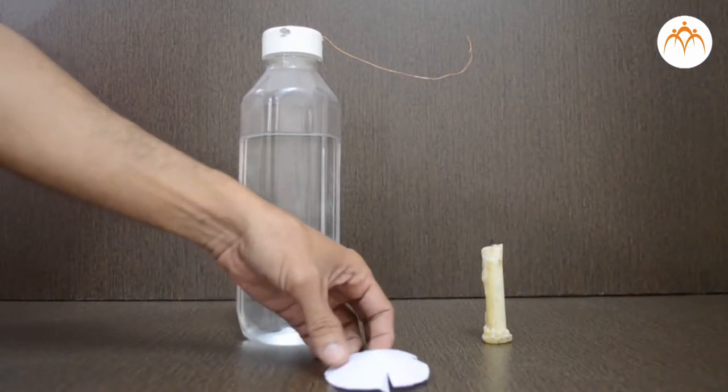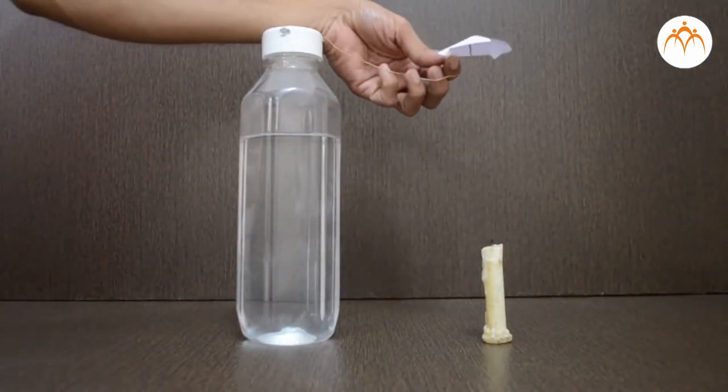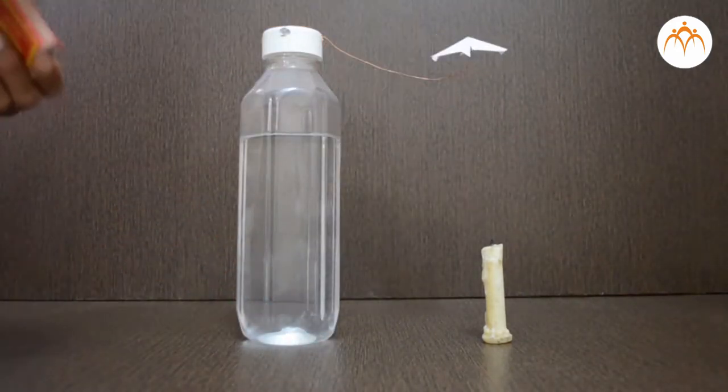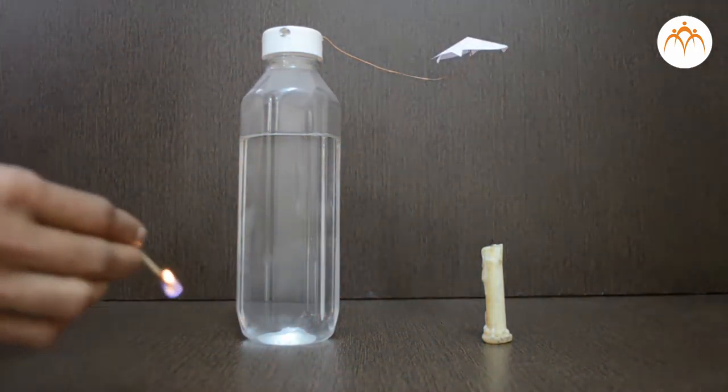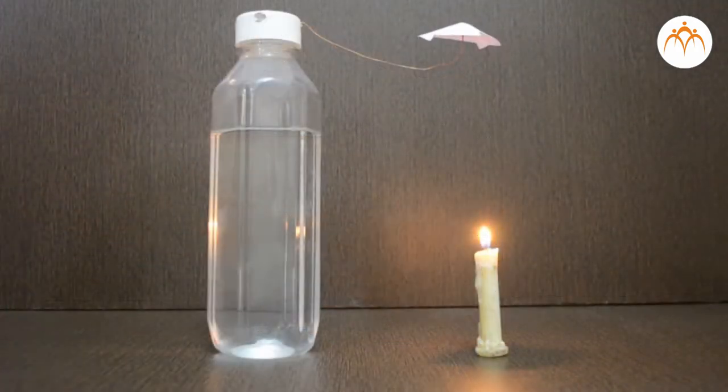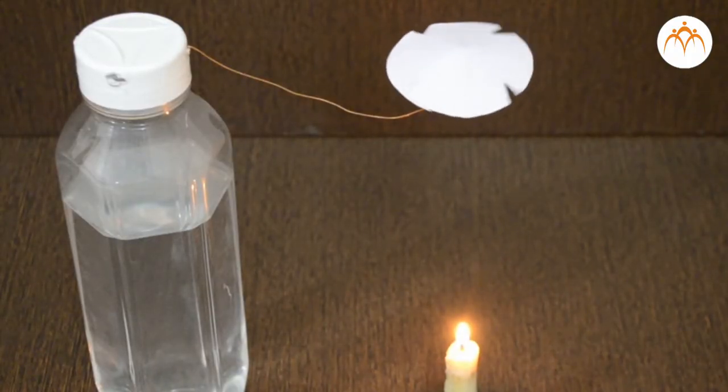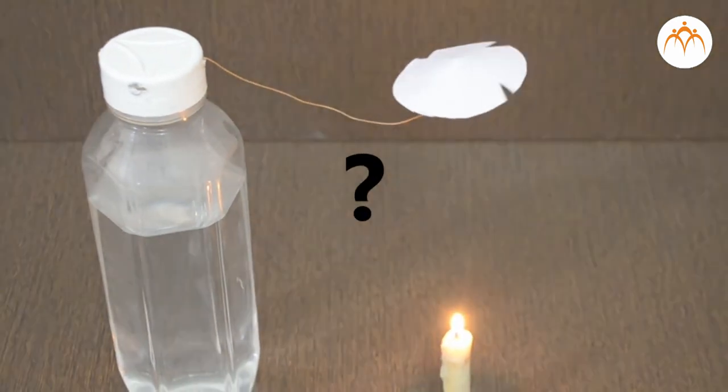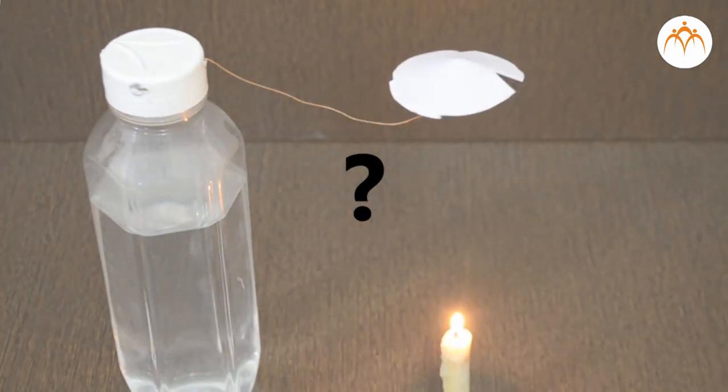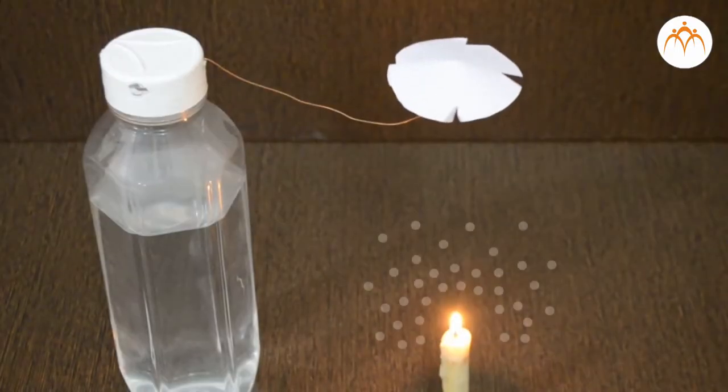If I place this over the burning candle at a safe distance, our paper fan starts moving in circle. What could be the reason for this? I did not apply any force for it to rotate. It is the air which is moving it.